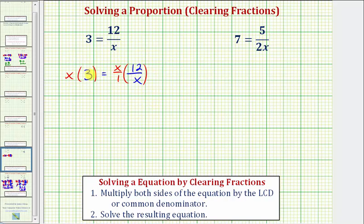So on the left we have x times three, which equals three x. On the right, simplifying before multiplying, x divided by x simplifies to one. So we just have one times 12, which equals 12. And now solving this equation, we divide both sides by three. And we have our solution x equals 12 divided by three equals four.